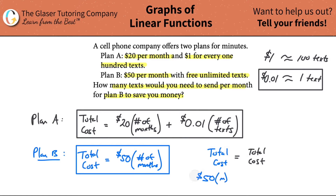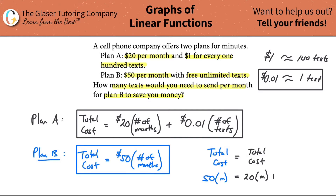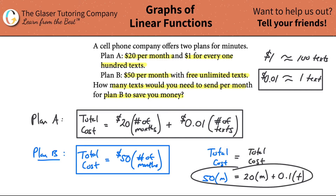I'll write 50 times m — where m represents the number of months — and that equals the Plan A equation: 20 multiplied by m, plus 0.01 times t, where t represents the number of texts. So m is number of months and t is number of texts. Now I've got two unknowns in one equation, but watch — I'm going to combine the like terms by subtracting 20m from both sides.